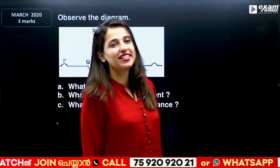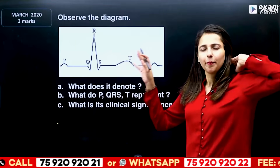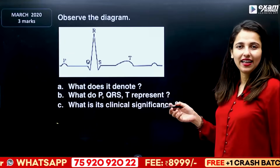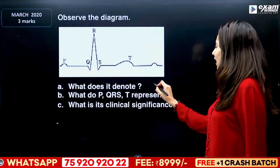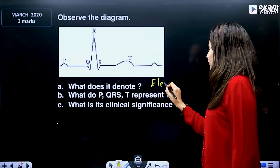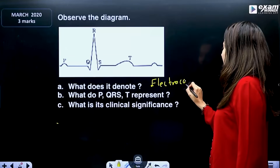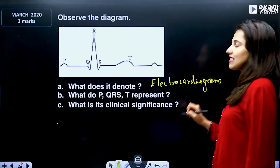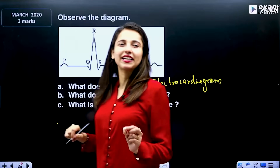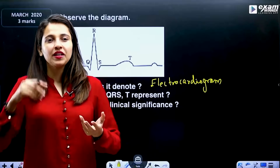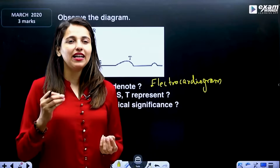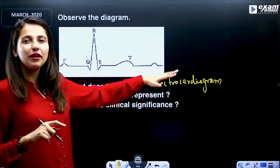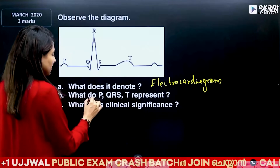In the Body Fluids and Circulation chapter, the question is: what does this graphical representation denote? It is called an electrocardiogram. If you are asked to expand ECG, there is no incorrect answer — electrocardiogram.